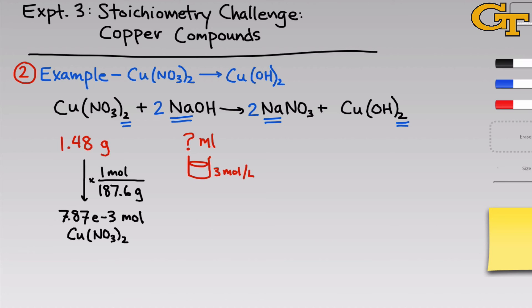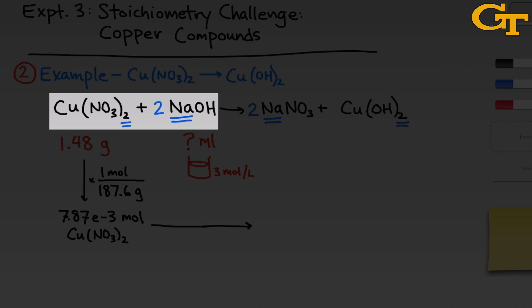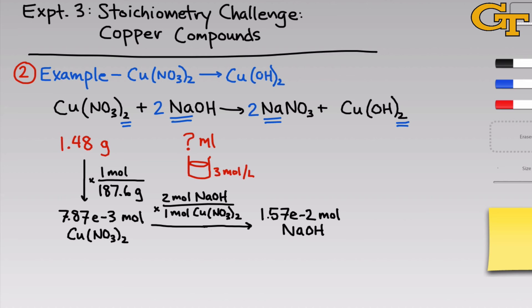Our goal is to get back to a volume of NaOH, and the concentration allows us to convert from moles to volume. First, we use the molar ratio from the balanced equation — 2 moles of NaOH per 1 mole of copper nitrate — to find we need 1.57×10⁻² moles of NaOH. As a final step, we use the molarity of 3 moles per liter, multiplying by 1000 mL per liter and dividing by 3 moles, to find we need about 5 milliliters of sodium hydroxide to fully react with the copper nitrate from part A.